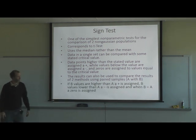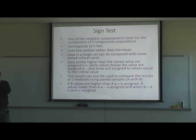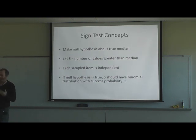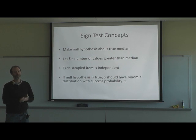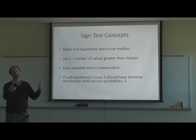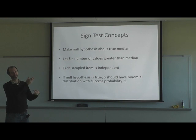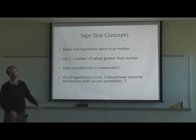The results can also be used to compare two methods using a paired sample A with B. If B values are higher than A, a plus is assigned; if B values are lower, a minus is assigned; if B equals A, a zero is assigned. Then you make a null hypothesis — here your median is going to be equal to either the value you're testing against or the other median.